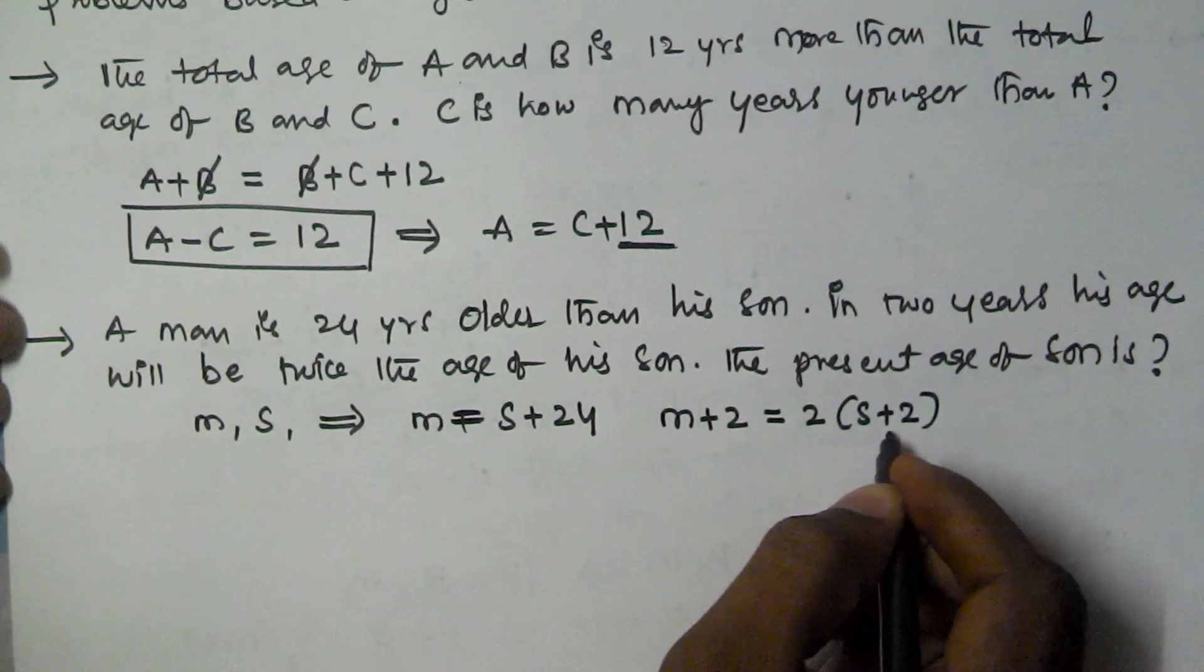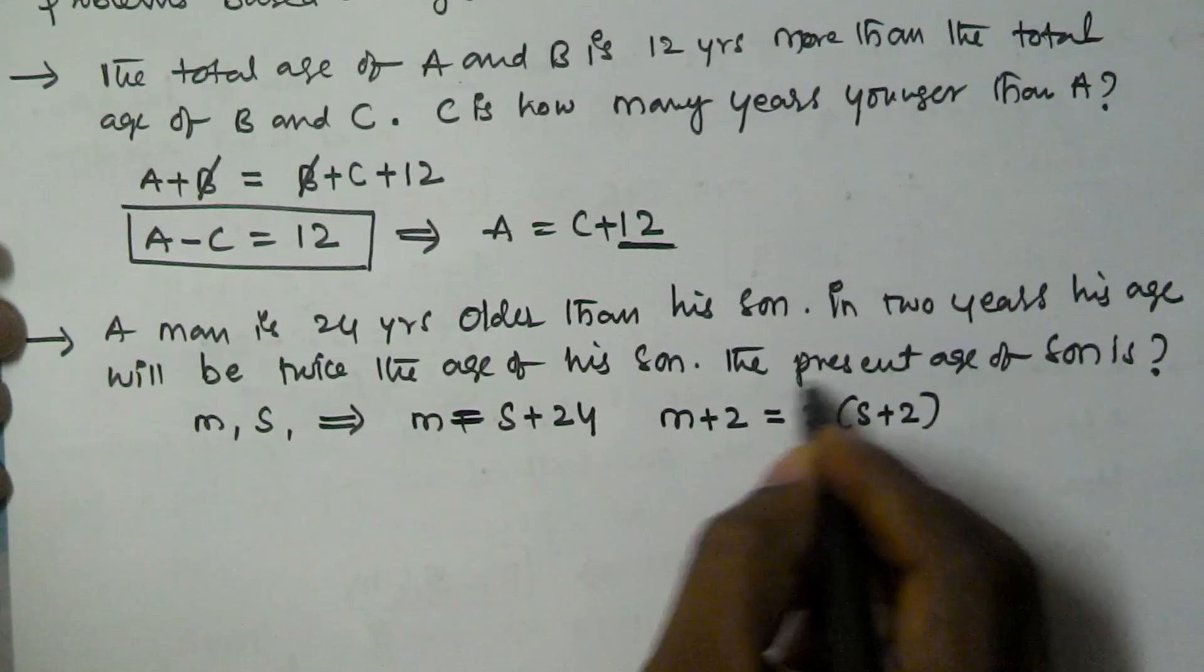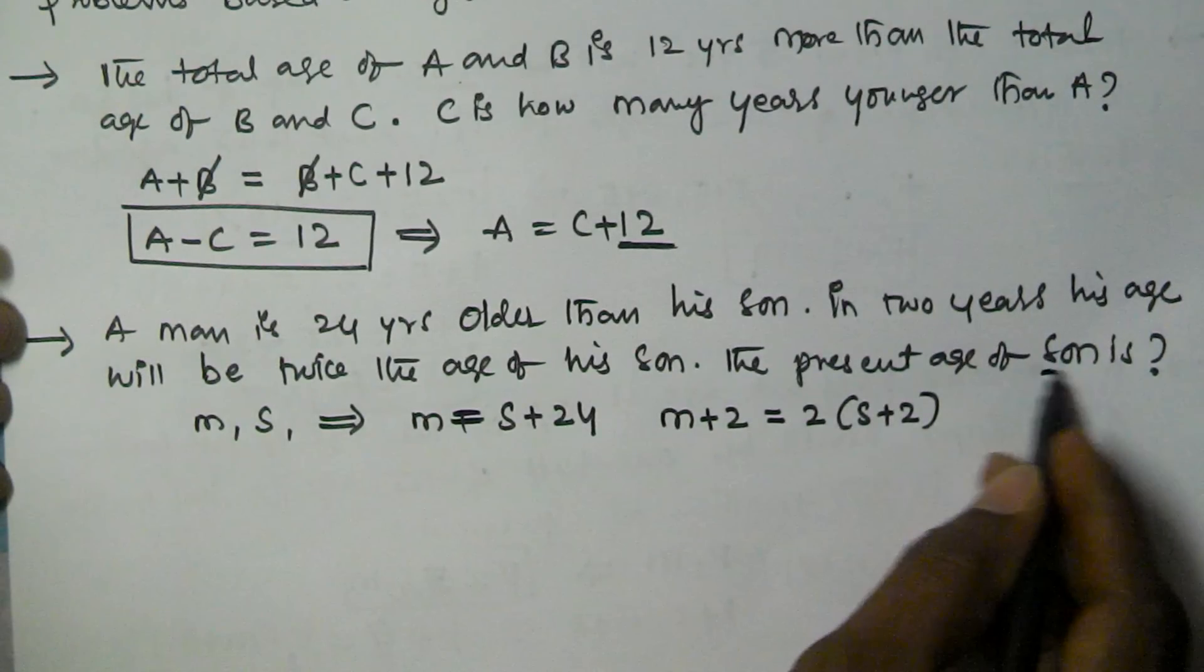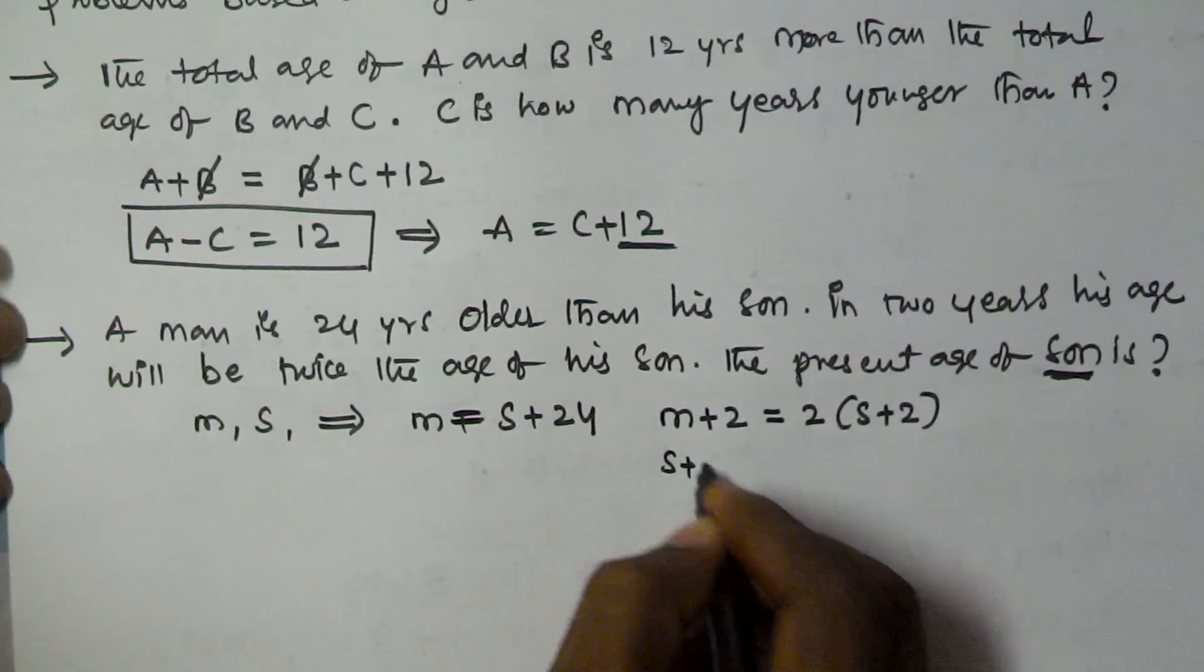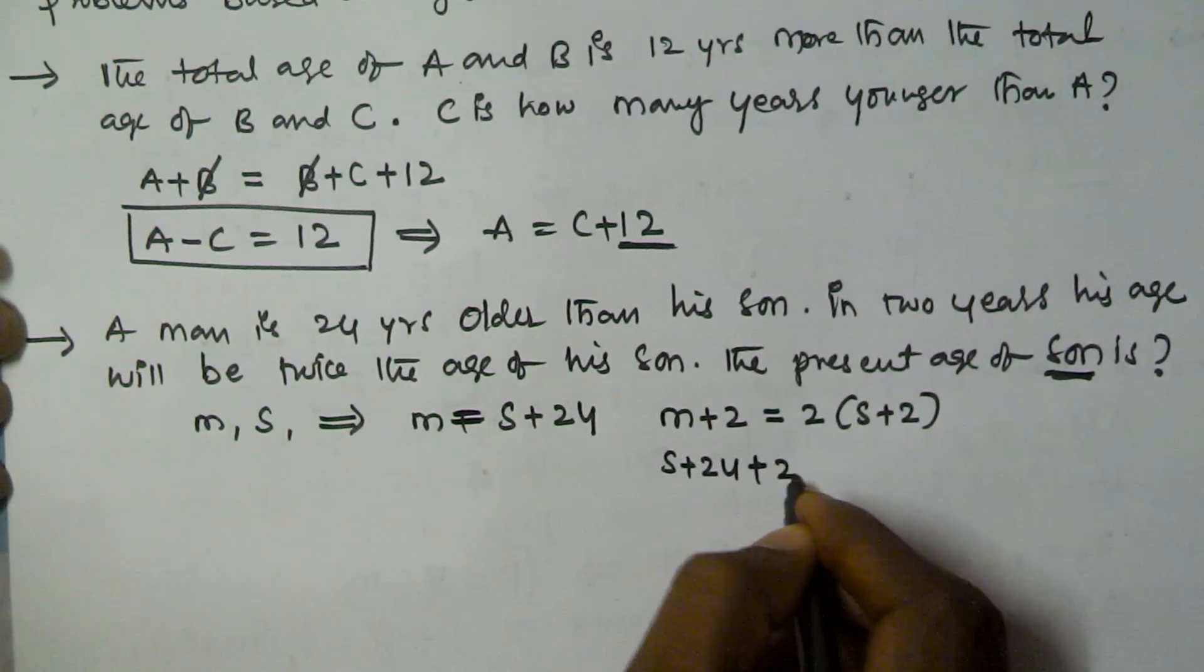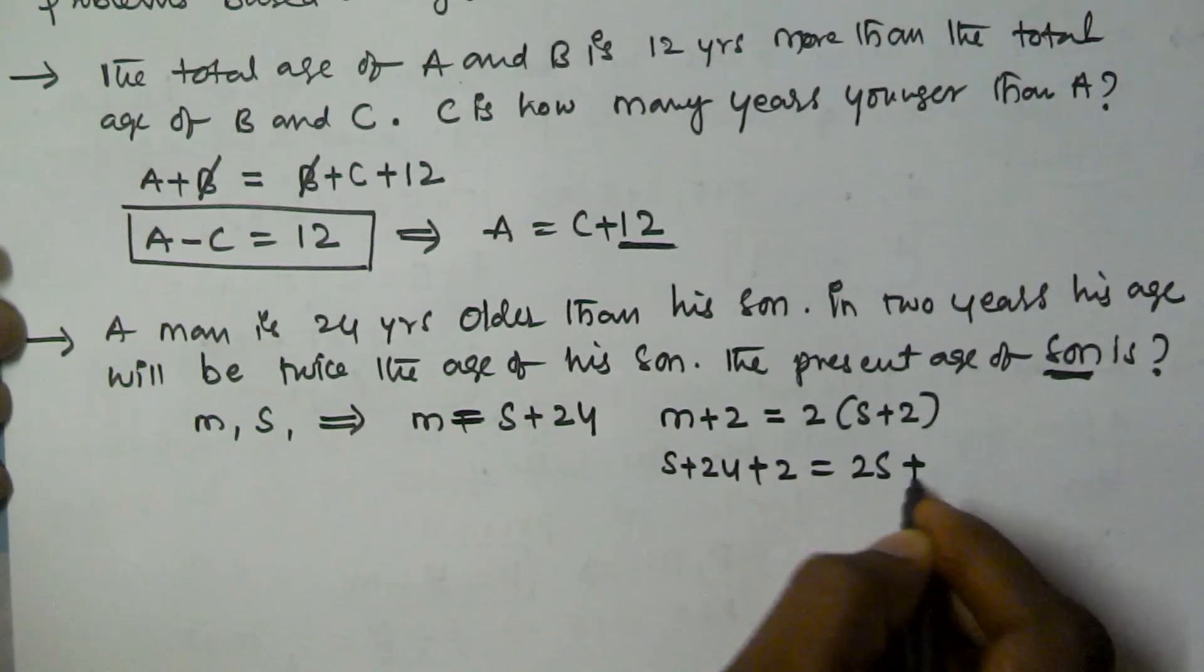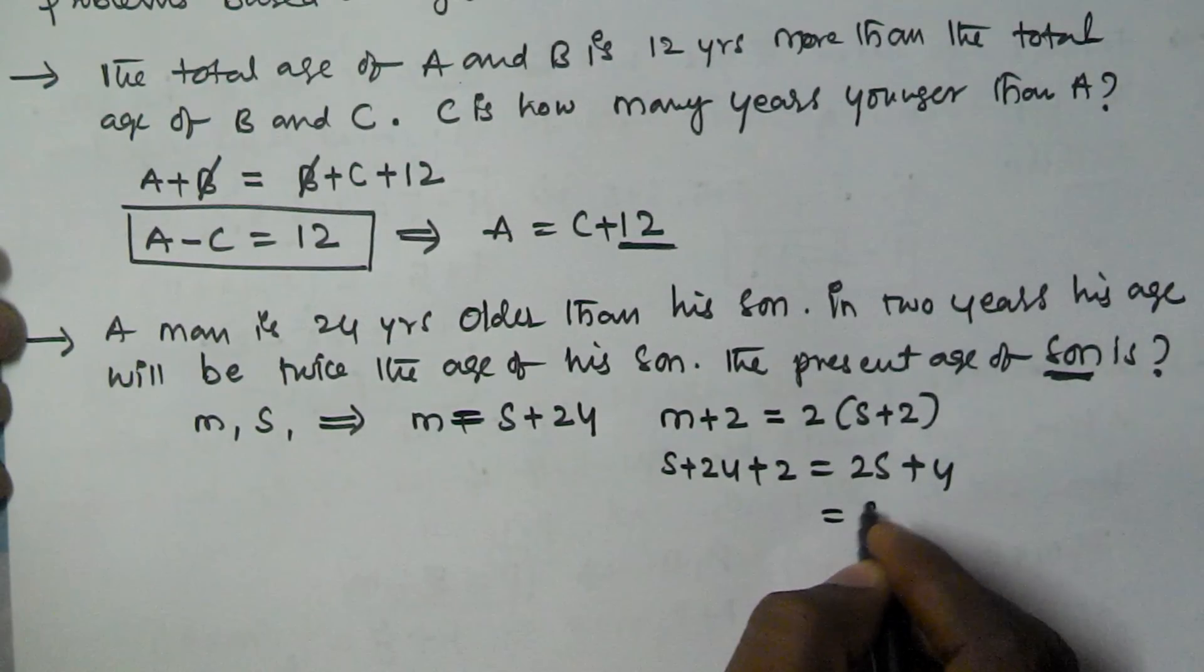After two years, the son's age will become S plus 2. Now we have to find the present age of the son. We have to replace M value in this. M is S plus 24. S plus 24 plus 2 is equal to 2 times S plus 2. That's S plus 26 equals 2S plus 4. I am moving S here, so we will get S. I am moving 4 here, so that is minus 4.